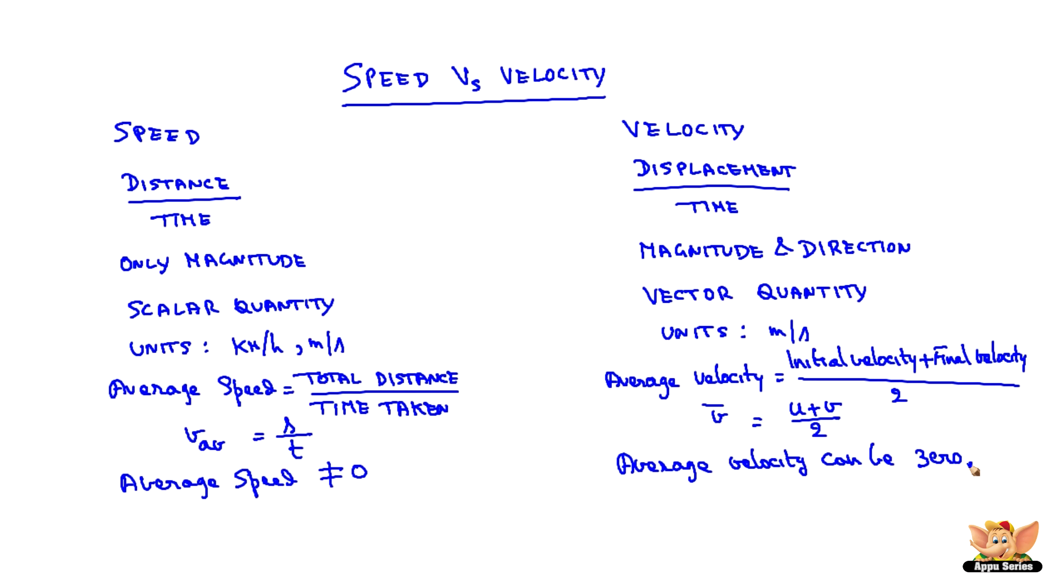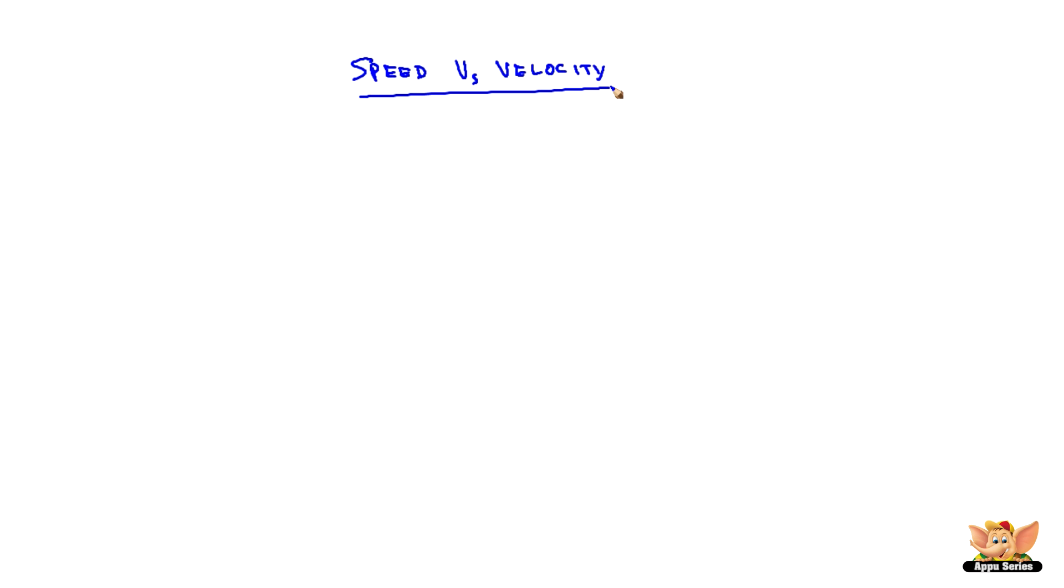Let us see an example to understand the differentiations between speed and velocity. Let us take an example wherein a boy is starting from his house to a shop which is located 100 meters from his house. He takes around 50 seconds to cover this distance.